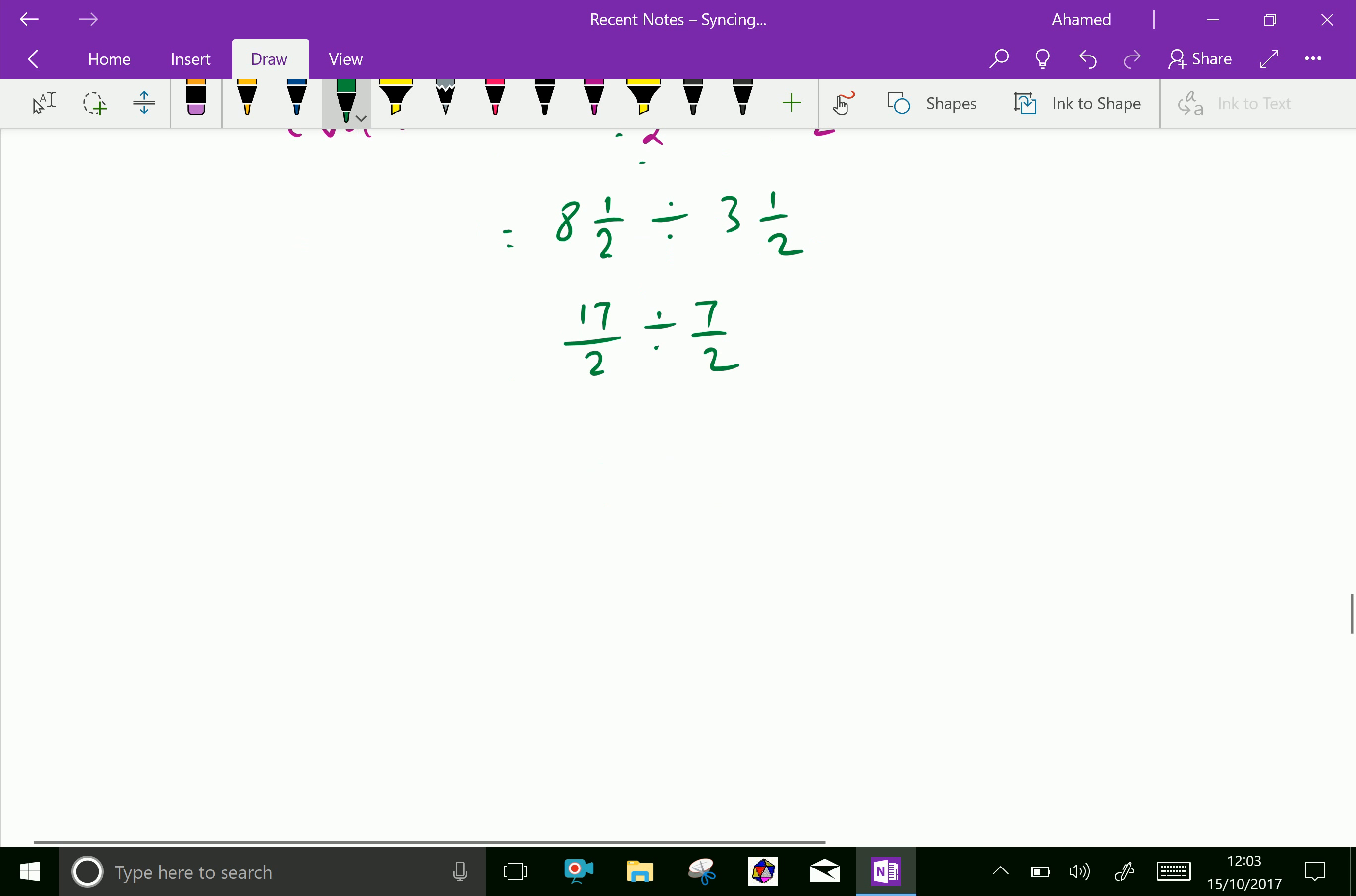Here, division of the fraction means multiplication of first and reciprocal of the second one, means 17 over 2 into reciprocal of 7 over 2 is 2 over 7. 2 and 2 cut, we get 17 over 7, which is further equal 2 times 7 is 14, remainder 3 over 7.